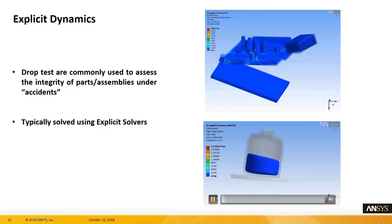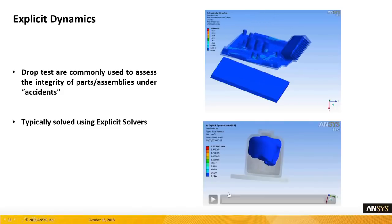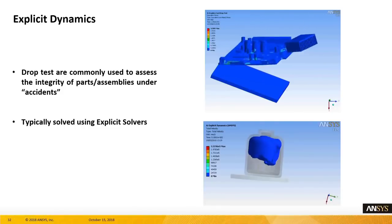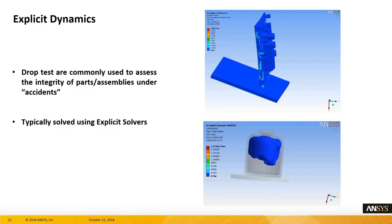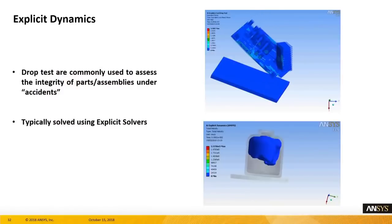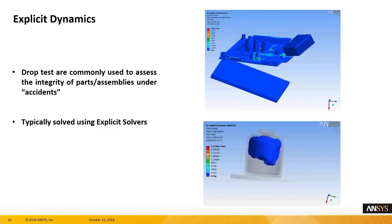ANSYS also has capabilities for modeling drop tests — these are catastrophic events, like when you buy a new iPad and drop it. These things have been designed to withstand certain levels of dropping from certain heights and angles. These analyses are generally run using explicit dynamics. ANSYS has a couple flavors of explicit dynamics to solve rapid impacting loads over short time durations.